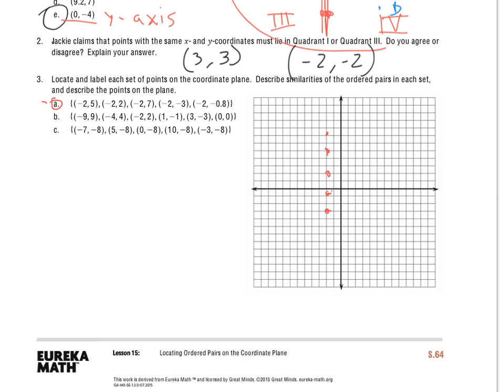Describe the similarities of the ordered pairs in each set. So I'm looking at these ordered pairs. What do I see that's similar to all of them? I see this. A negative 2 as my first number for my coordinate. So for A, I see that all the points in A have a negative 2 in the x.